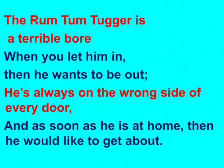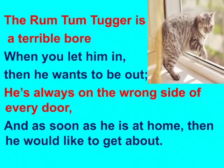The Rum Tum Tugger is a terrible bore. When you let him in, then he wants to be out. He is always on the wrong side of the door. And as soon as he is at home, then he would like to get about. The poet is saying the Rum Tum Tugger is a terrible bore. If he was outside, he would rather be in. And when he is in, he would rather be out. If anyone tries to keep him inside, he makes a large fuss. And when he is at home, he wants to go out, and when he is out, he wants to come home.